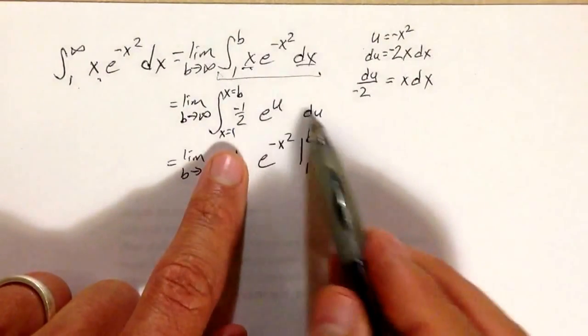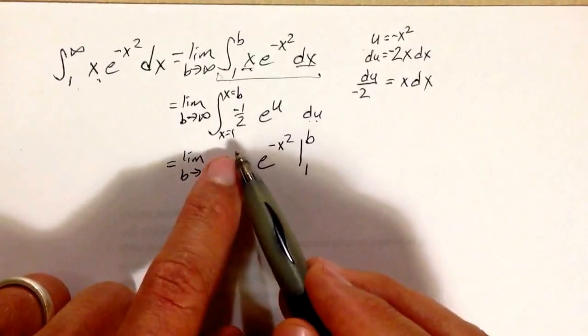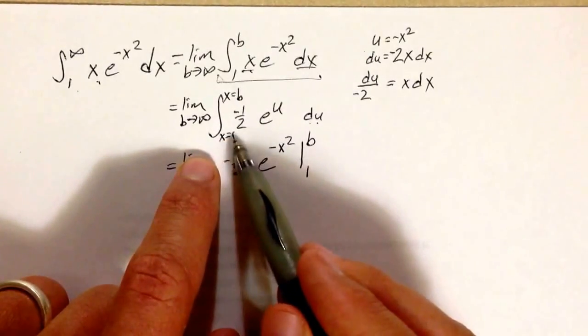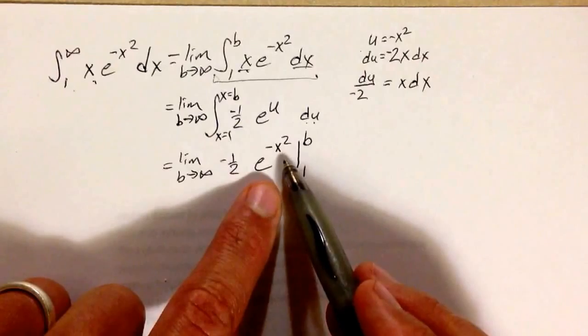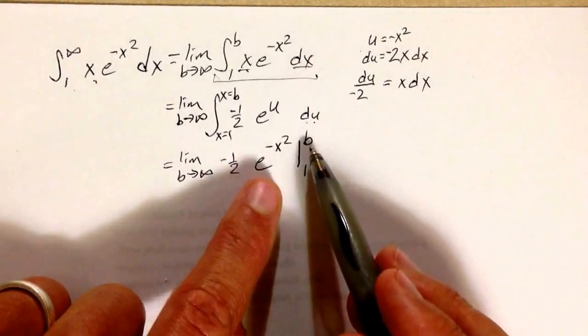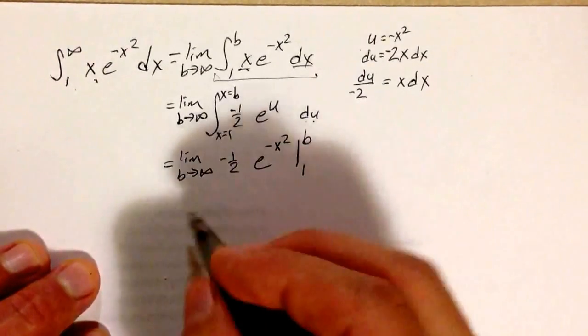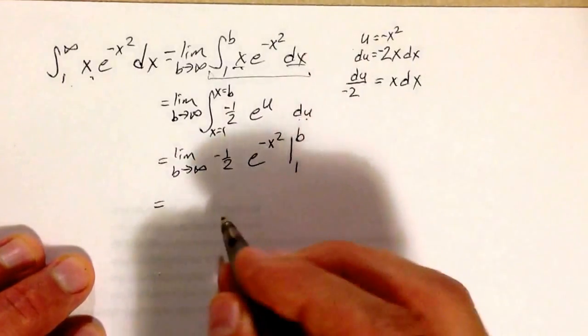Notice when I have this variable as something other than x, I clarify that my integral is from x equals 1 to x equals b. Now that my variable is x and I'm integrating from 1 to b in terms of x, I don't have to write a specific variable there.